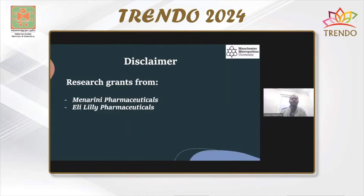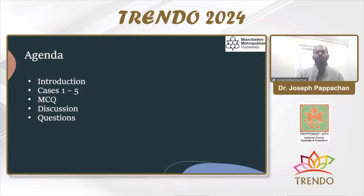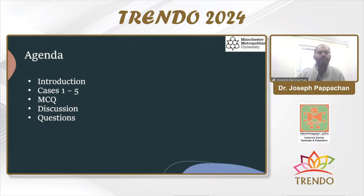This is my competing interest statement. I have received a research grant for my diabetes nursing colleagues from Menarini Pharmaceuticals, and we are in the process of a randomized controlled trial with tirzepatide with LULI. But I don't have any direct conflicts of interest related to the talk today. I'll give a brief introduction about how we approach different types of diabetes in daily clinical practice, then show five different case scenarios with MCQs and real-time voting, followed by a five to ten minute discussion.